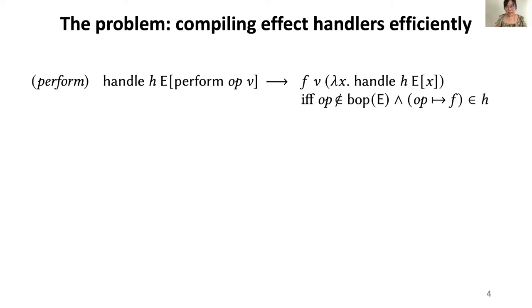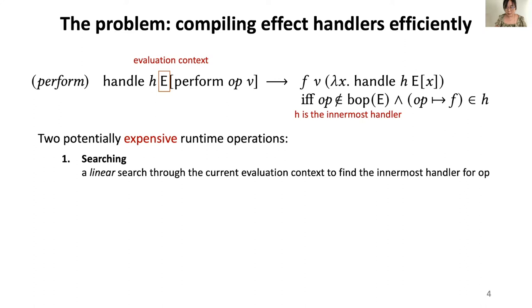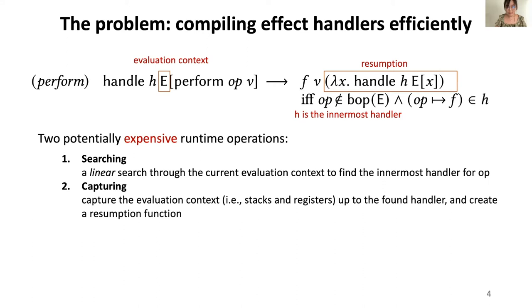It seems everything just works well until you want to compile algebraic effects efficiently. The main problematic rule is perform, which includes two potentially expensive runtime operations. First, since the perform can be deeply inside the evaluation context and we require h to be the innermost handler. That means we need to perform a linear search through the current evaluation context. Second, after finding the handler clause f, we need to provide the resumption. That means we need to capture the evaluation context up to the find handler and create a resumption function. This is not only expensive, but might be impossible for some platforms like .NET or Wasm where you have no access to stacks. In this work, we address these compilation challenges by representing various refinements to algebraic effects.